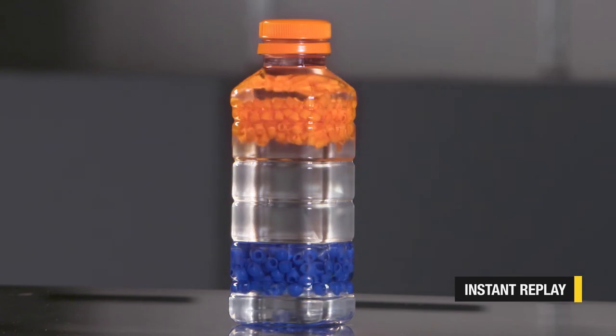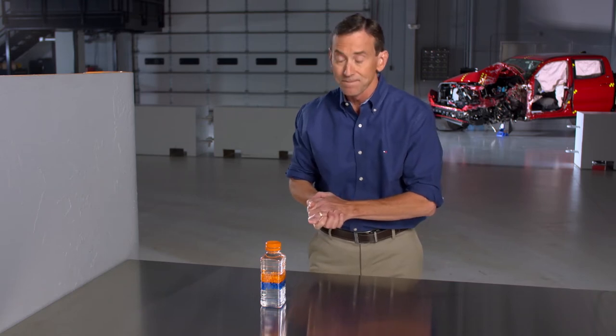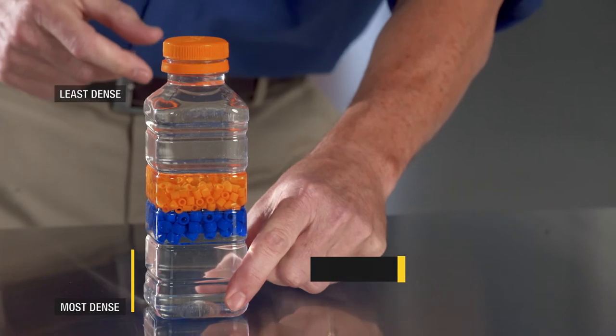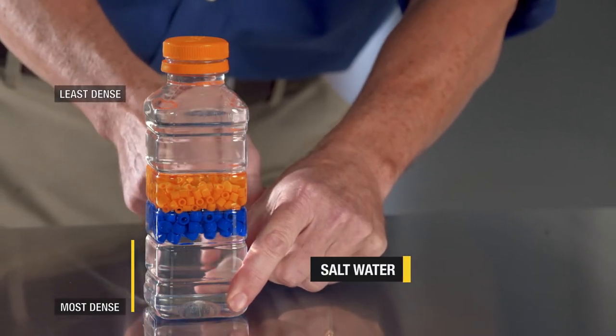So we actually have four different materials here, all of different densities. Where do you think the most dense material is? You're right if you said the bottom. So down here we have super saturated salt water. Lots of salt in there.